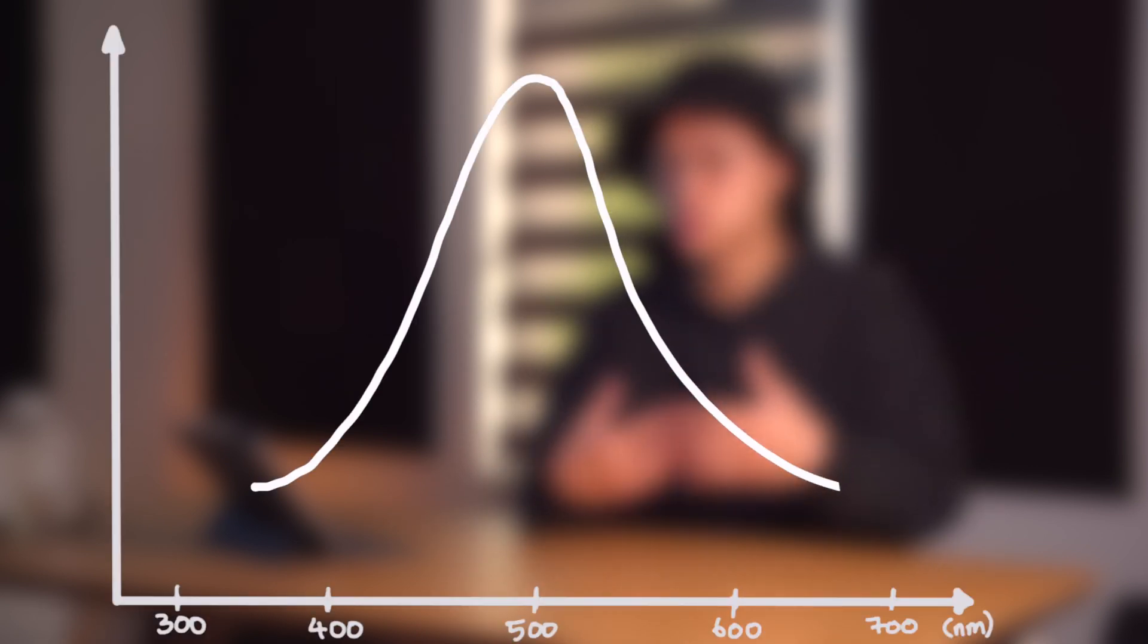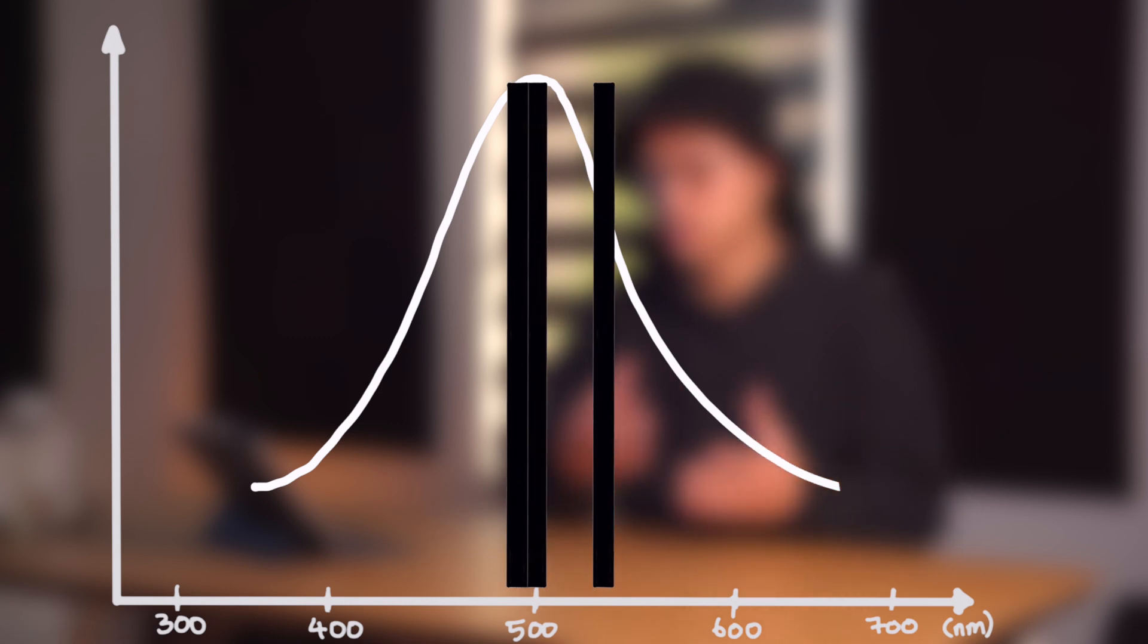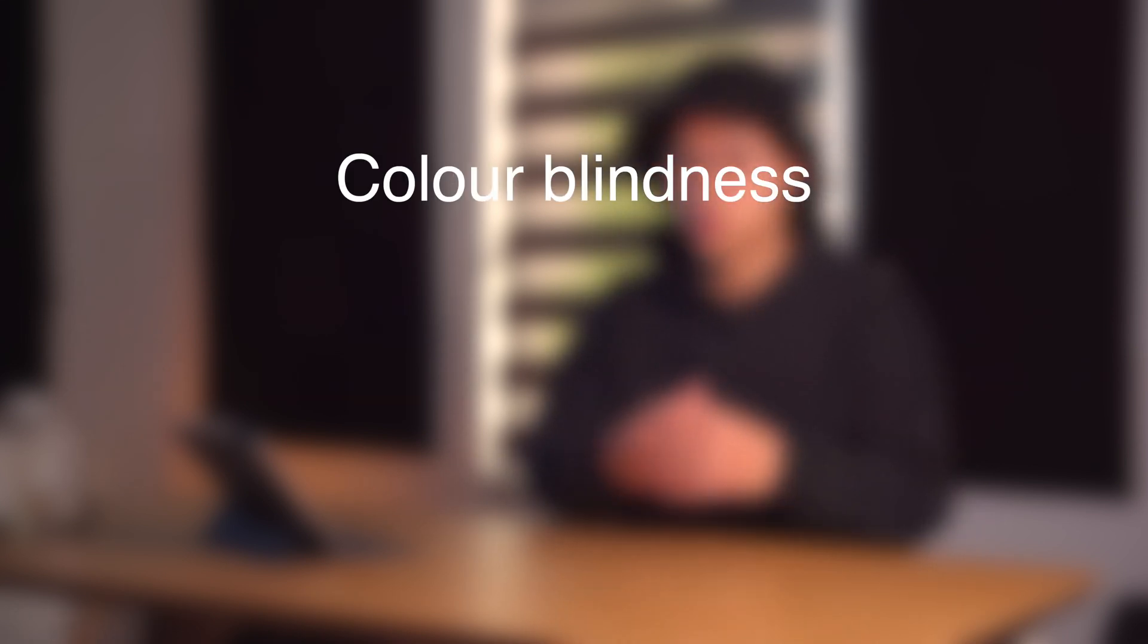Remember, if you only use one channel to analyse the different wavelengths of light, given that the curve peaks at let's say 500nm, then due to its symmetry, the wavelengths that are higher and lower than 500 will seem similar. It is so similar that it's often hard to differentiate. You can see why this is a problem. This is colour blindness, no colour at all.